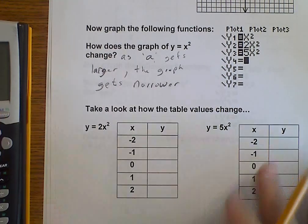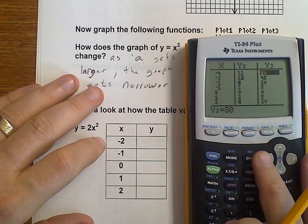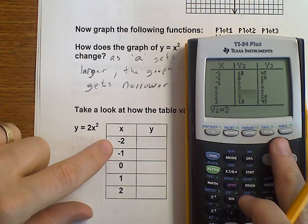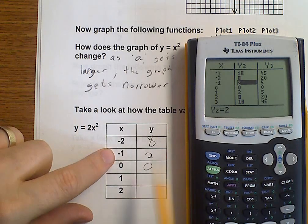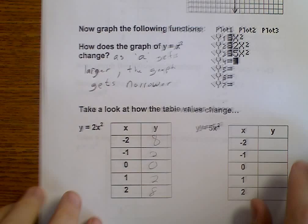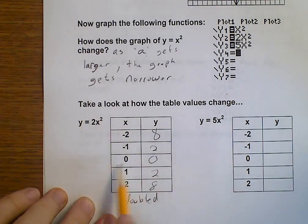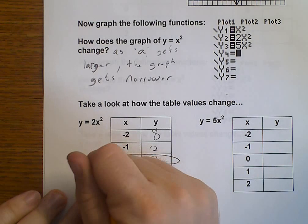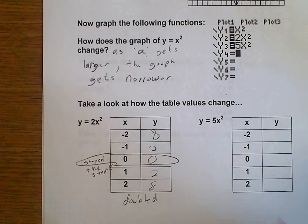The graph gets narrower. So, as a gets larger, the graph gets narrower. As we get a larger number in front of x squared, our graph just gets skinnier and skinnier. So, let's actually take a look at what these values do. We're going to go to the table. And we're going to look at these. Well, y2, this was 2x squared. So, at negative 2, we are at 8, then 2, then 0, then 2, and then 8.